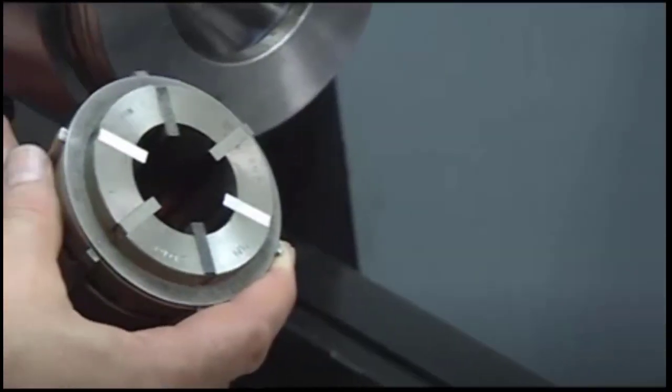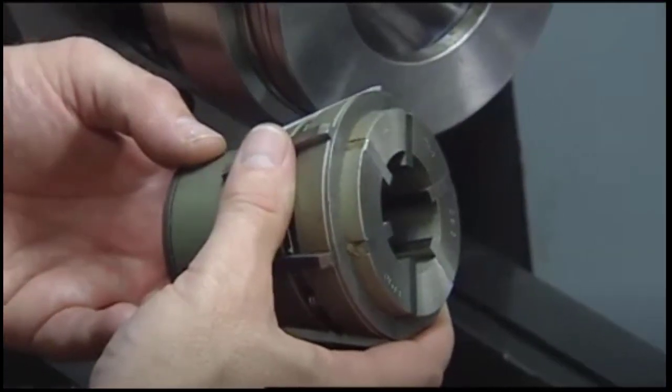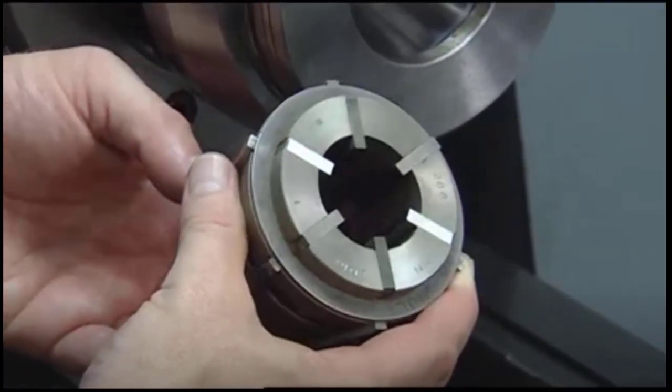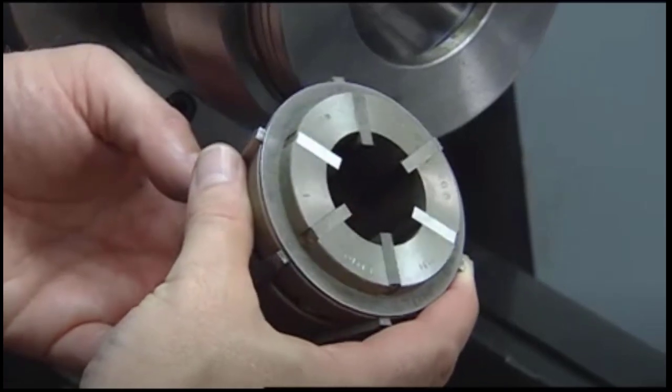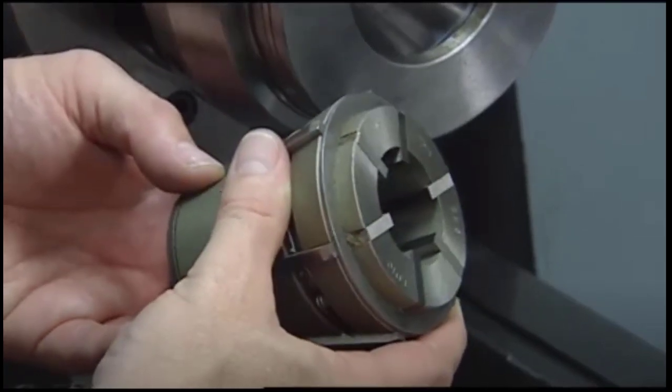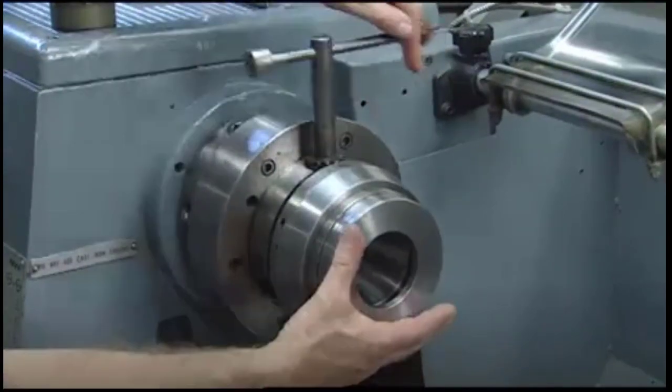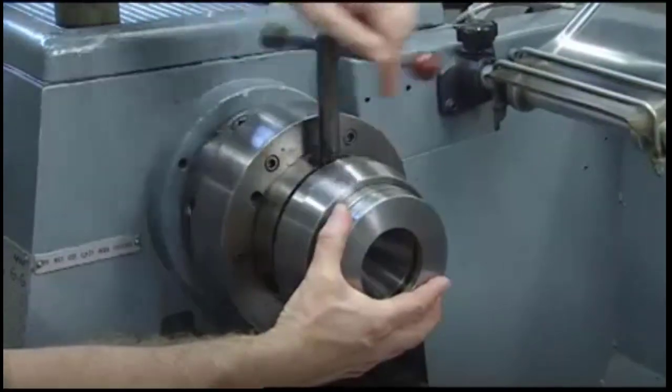The last type of collet we're going to look at is a flex collet. It usually has a range of about an eighth of an inch and is used with a collet chuck. To mount the collet, remove the retaining cap by turning the chuck key counterclockwise.